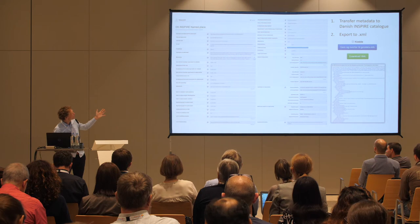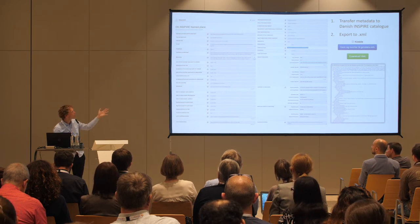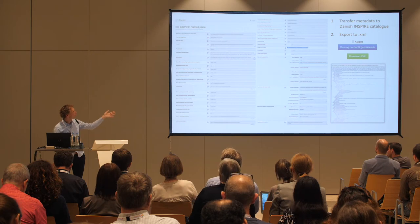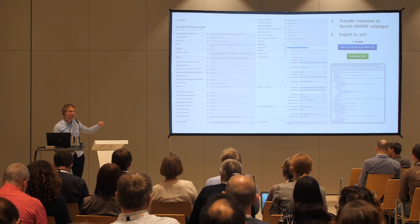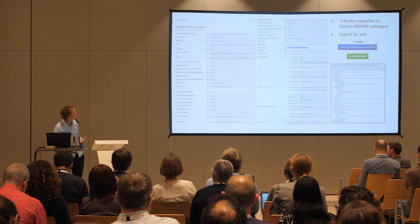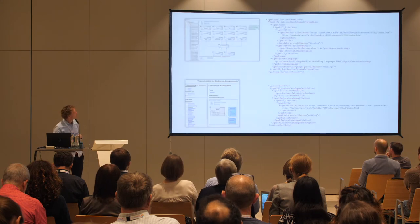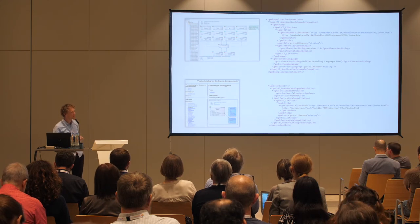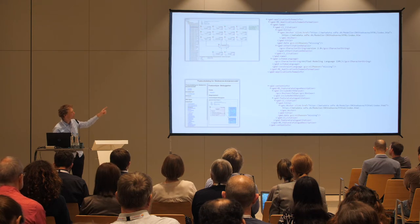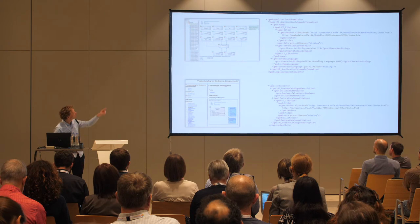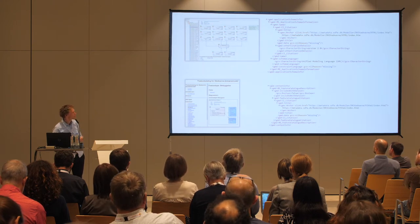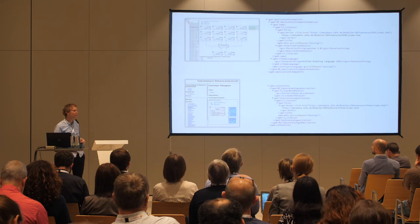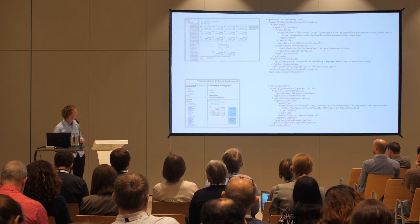The system has functionality to transfer this metadata into the Danish INSPIRE catalog where it must be visible according to the directive. We can also export the metadata to an XML file, which is very useful for validating. The ISO 19139 standard allows a lot of metadata content — it also allows inclusion of UML and feature catalogue. Our feature catalogue and UML model go with our metadata and can be accessed because they are uploaded to a server.